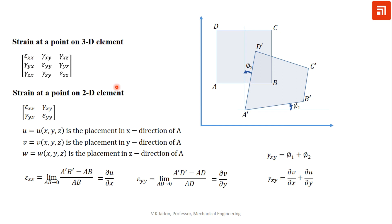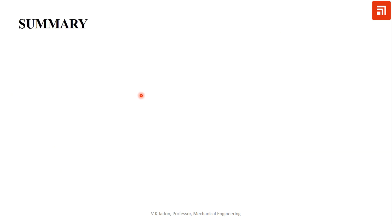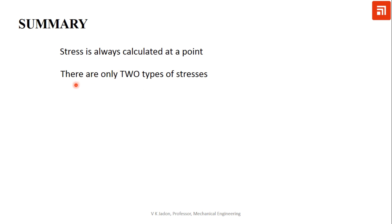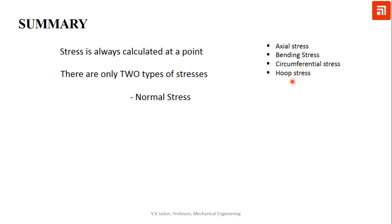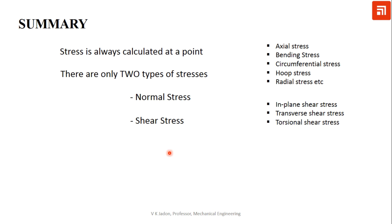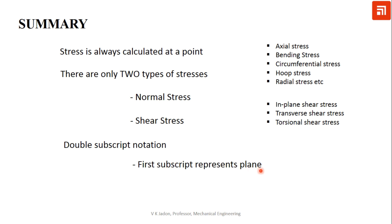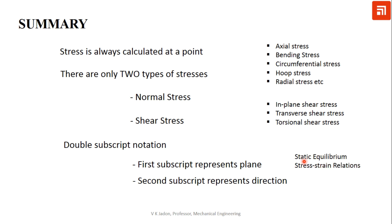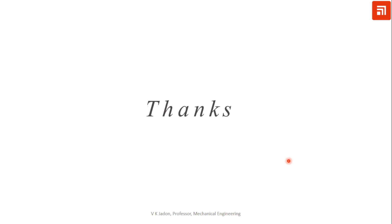In summary: stress is always calculated at a point; there are only two types of stress — normal stress (which includes axial, bending, circumferential, hoop, and radial stress) and shear stress (which includes in-plane shear, transverse shear, and torsional shear). Stress follows double subscript notation where the first subscript represents the plane and the second represents the direction. These concepts are foundational for developing stress expressions in different engineering members. Thank you for attending this lecture.